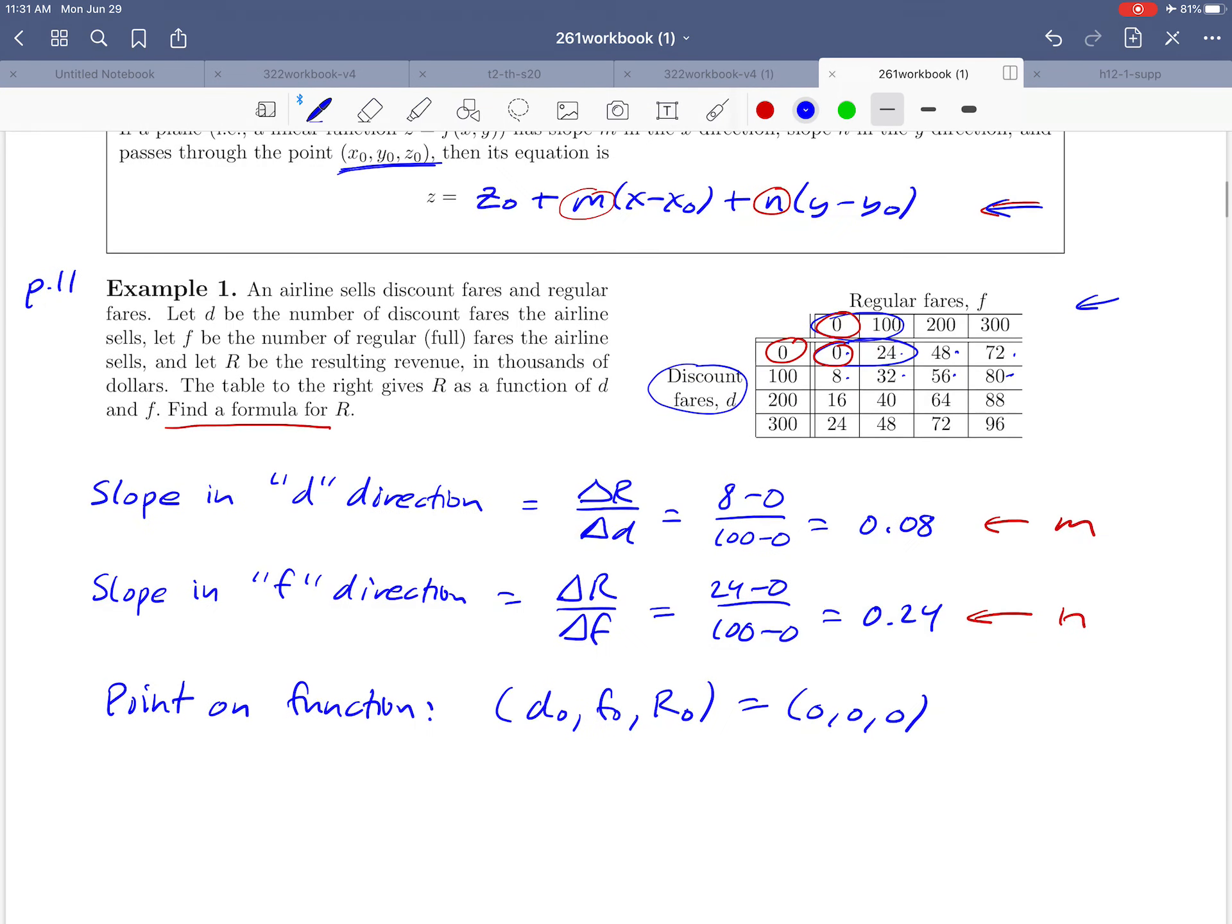We have enough information then to write down the equation. Basically, we're just going to copy down this formula that's sitting up here. The only thing we have to remember is that we're not using X's, Y's, and Z's. We're using D's, F's, and R's. So this formula is going to look like this when we fill it all in.